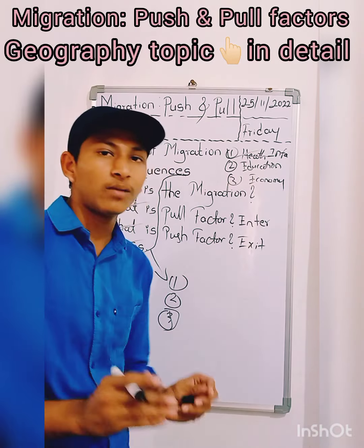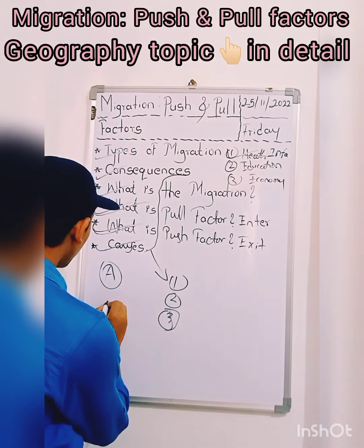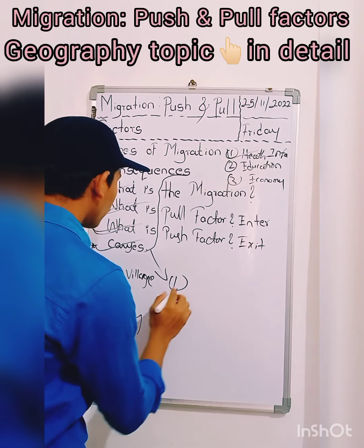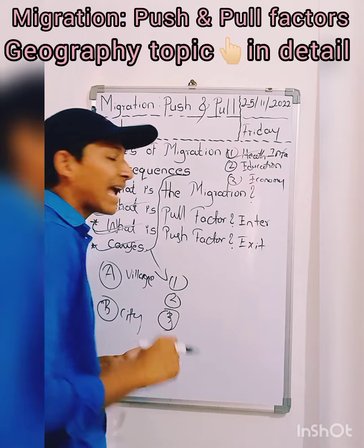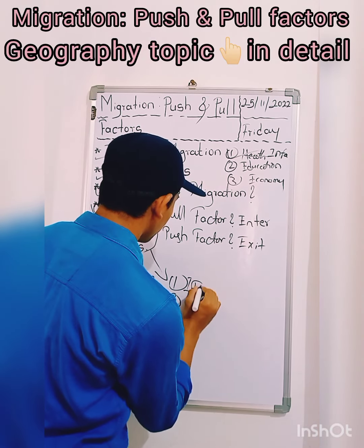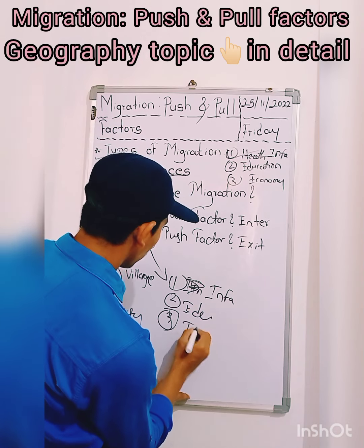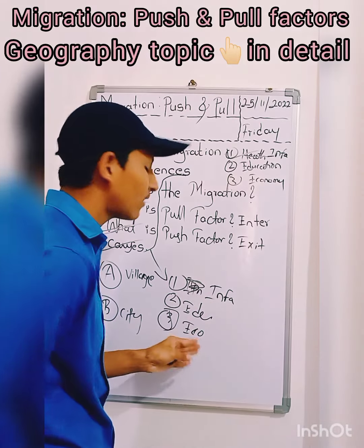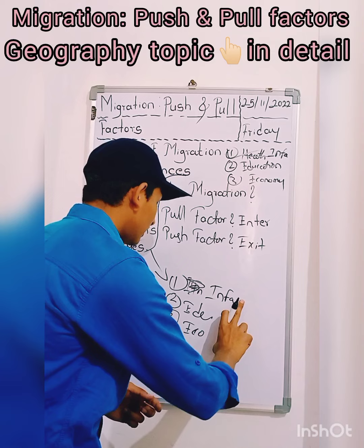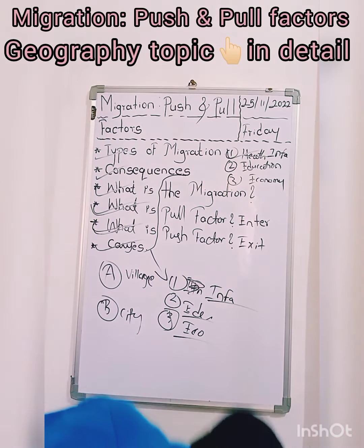What are the infrastructure facilities? Here we will be taking A and B — presuming that A is the village and B is the city. Here we will be discussing all the factors according to push and pull. The factors are infrastructure (INFA), education (EDU), and economy (ECO). So many factors are there, but just for clarity I have selected the major ones: infrastructure, education, and economy. All are very important for our life.